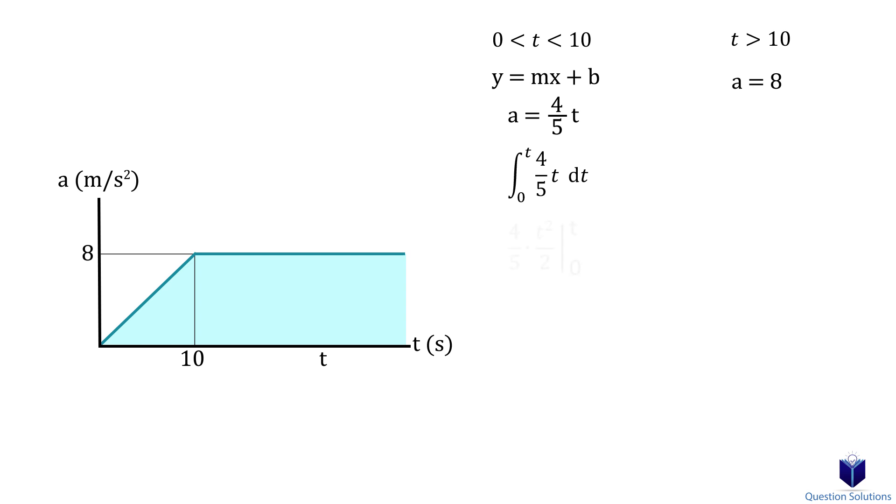Now we need to figure out the velocity at 10 seconds. We can do that by substituting a time value of 10 seconds into our equation. When we solve it, we get 40 meters per second. So in other words, at 10 seconds the car is moving at a speed of 40 meters per second.